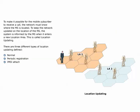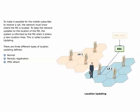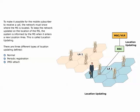To make it possible for the mobile subscriber to receive a call, the network must know where the MS is located. The system is informed by the MS when it enters a new location area — this is called location updating. Normal, periodic registration, and IMSI attach are the three different types of location updating defined. The MS may also inform the network when it enters an inactive state — IMSI detach.